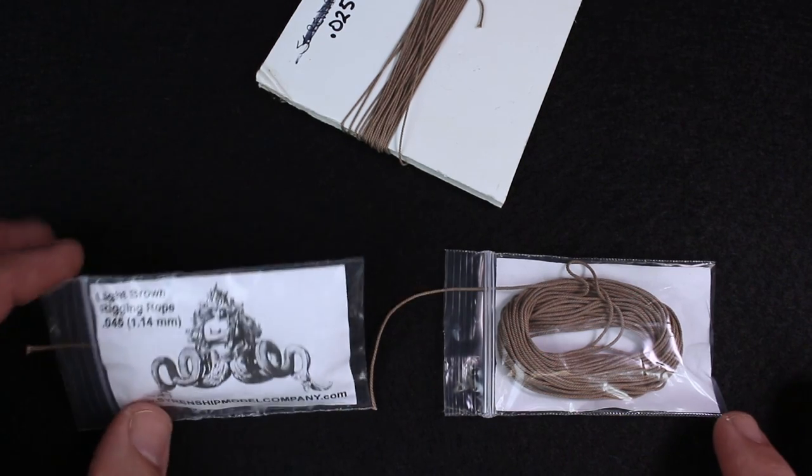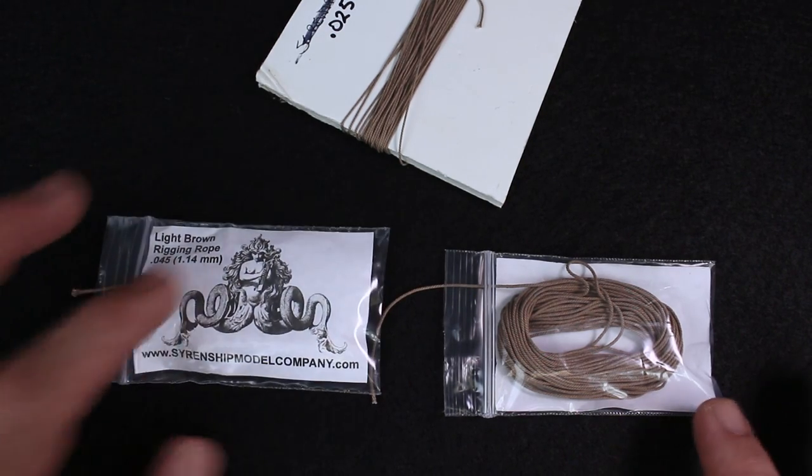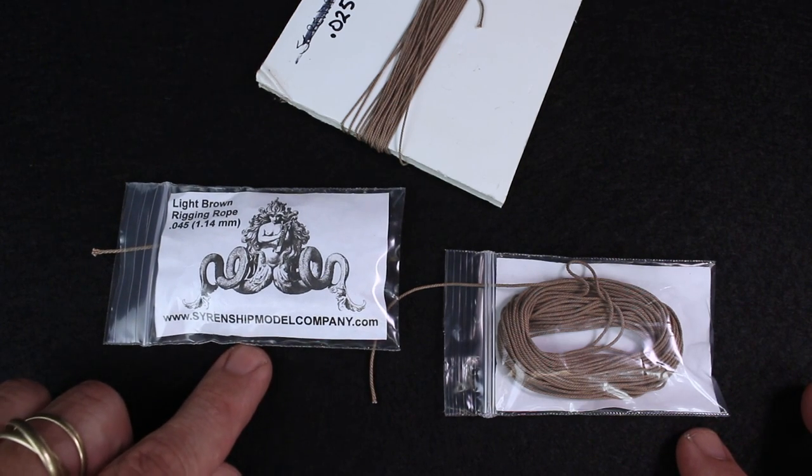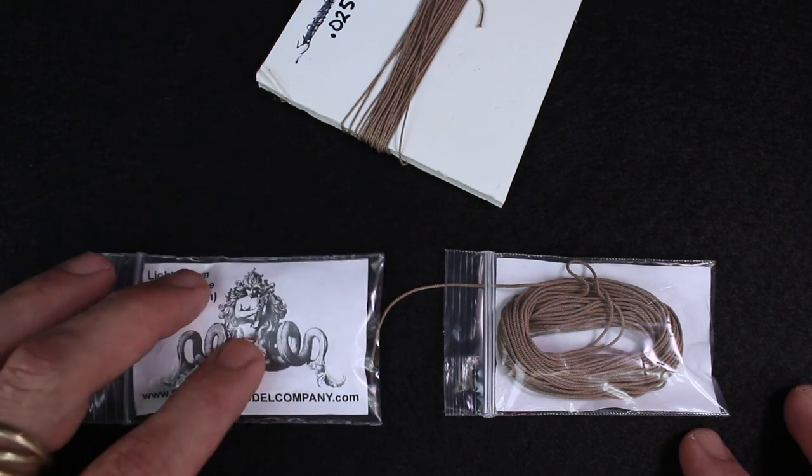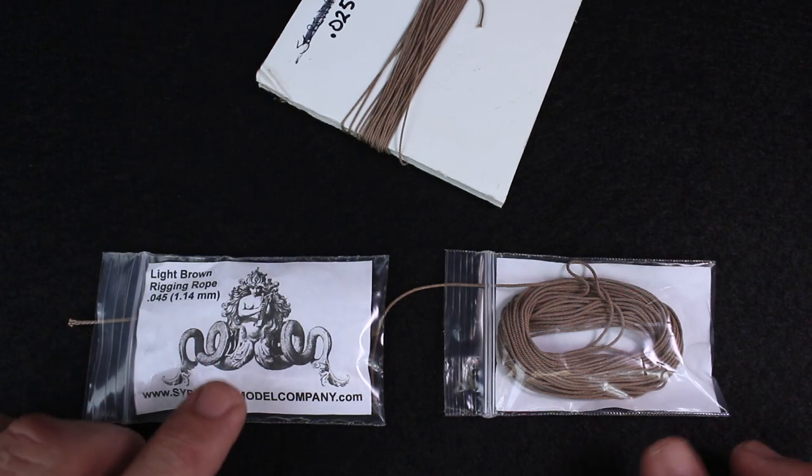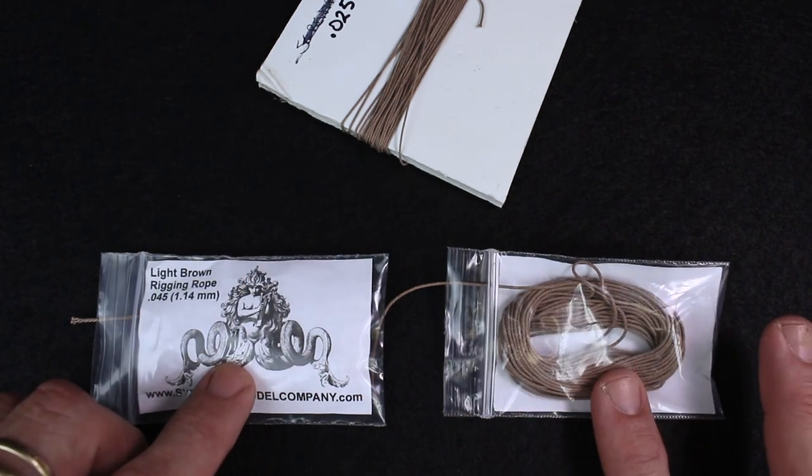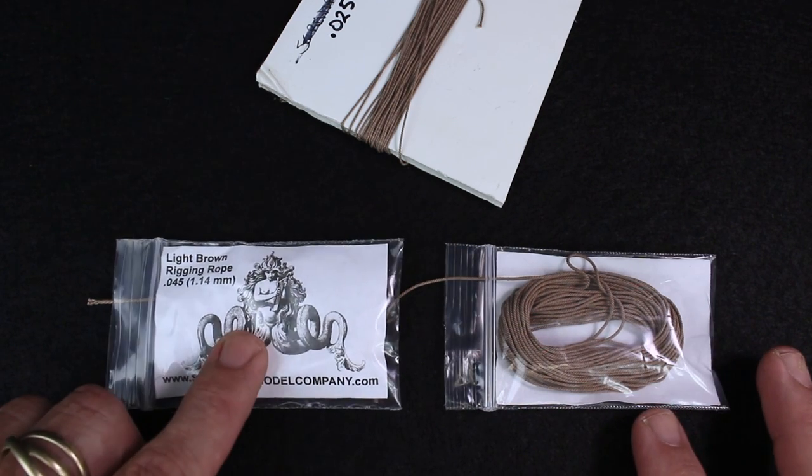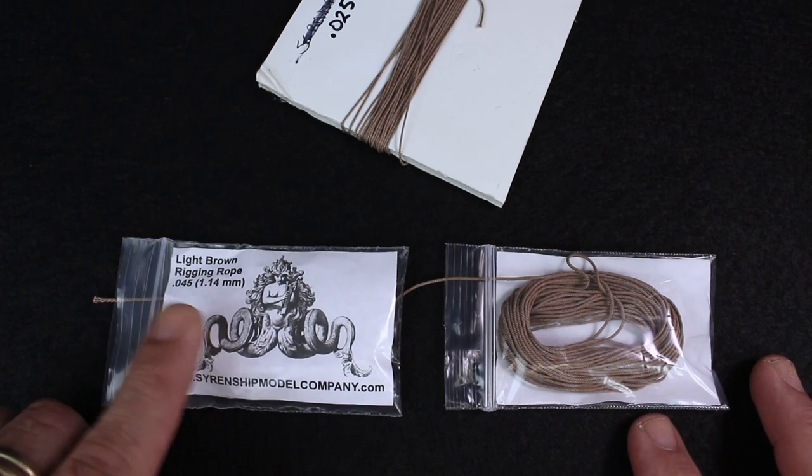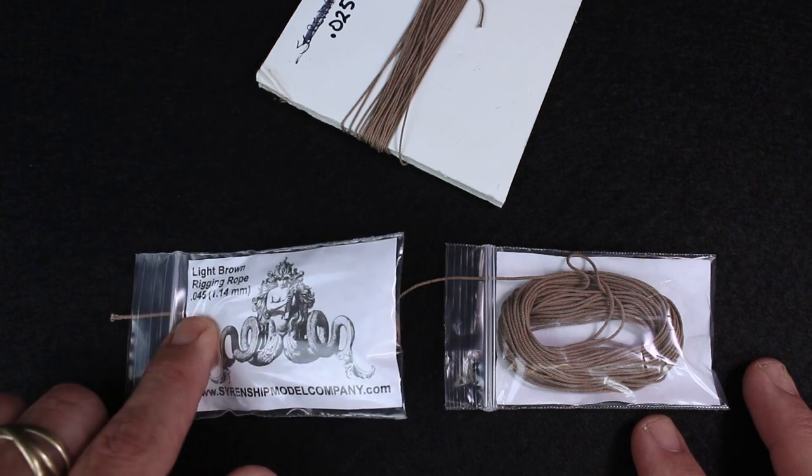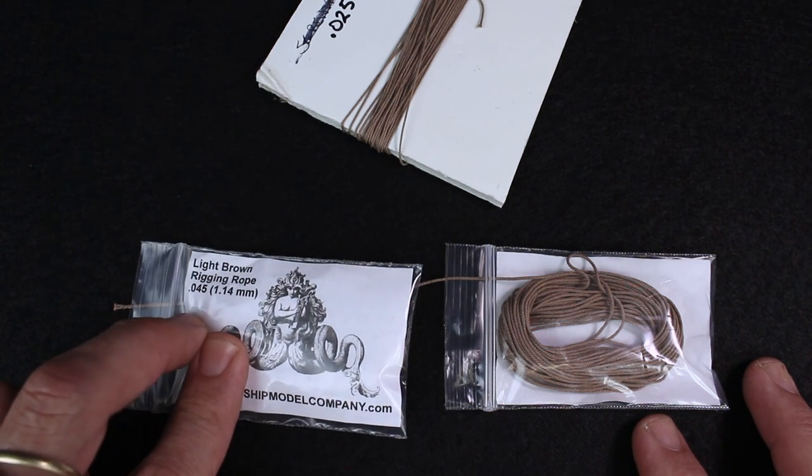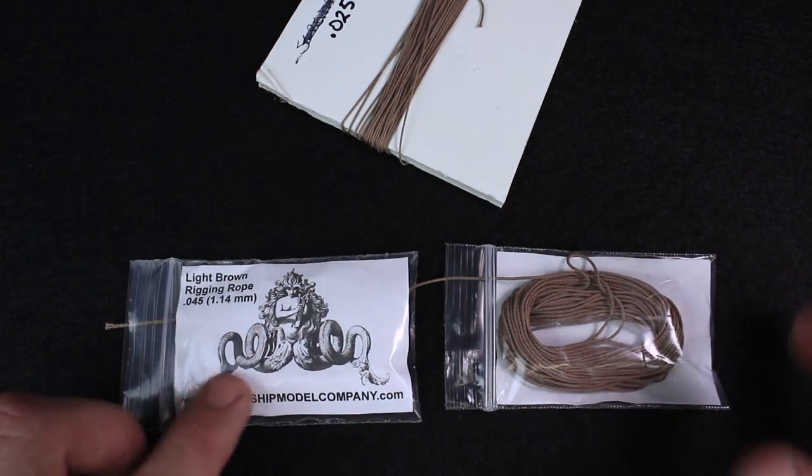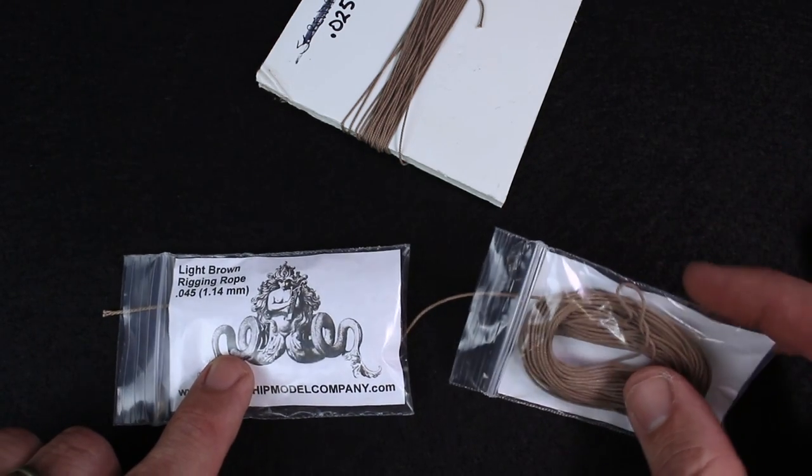This is a model rigging rope, sail rope for model ships produced by the Siren Ship Model Company. They offer this rope in a variety of colors - I think four: black, a lighter tan, and another color I can't remember. They offer the rope in a variety of scales measured both in inches and millimeters.